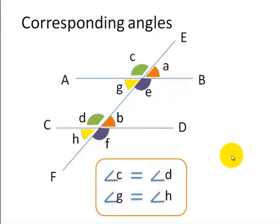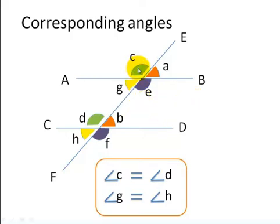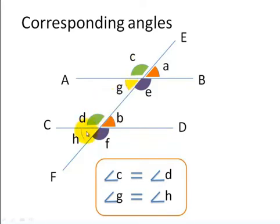Now we are going to look at corresponding angles. Angle C and angle D are corresponding angles. Similarly, angle G and angle H are corresponding angles. Note that corresponding angles are equal. Can you spot any other corresponding angles?